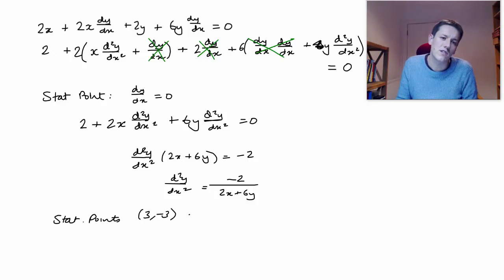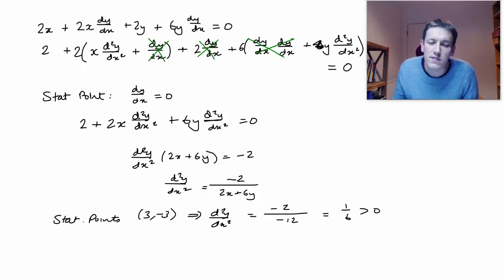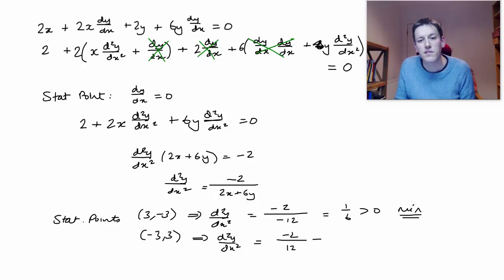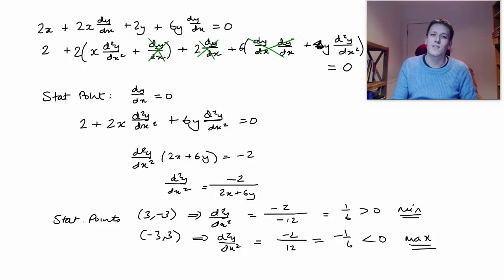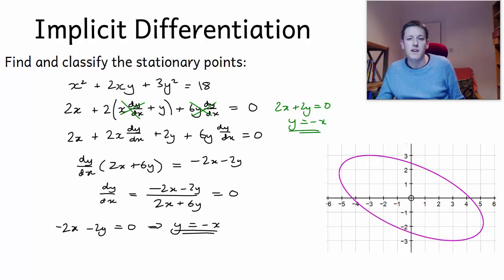Remember we found that one of our stationary points was (3, minus 3). Plugging in x equals 3 and y equals minus 3, I get minus 2 divided by (6 minus 18), which is minus 12, giving one sixth — that's positive, so that stationary point is a minimum. Plugging in x equals minus 3 and y equals 3, I get minus 2 divided by (minus 6 plus 18), which is plus 12, giving minus one sixth — that's negative, so that one is a maximum point. It was crucial that we used the fact that dy/dx equals zero at the stationary point to simplify the algebra.